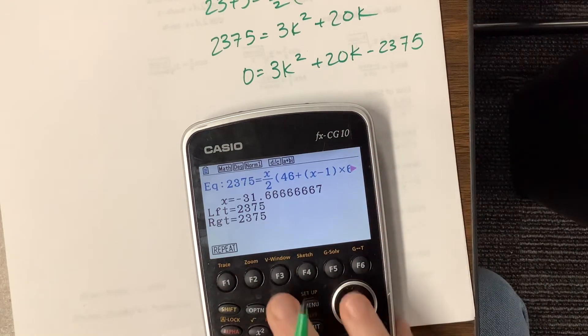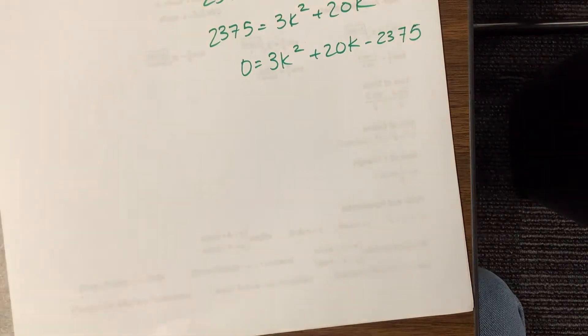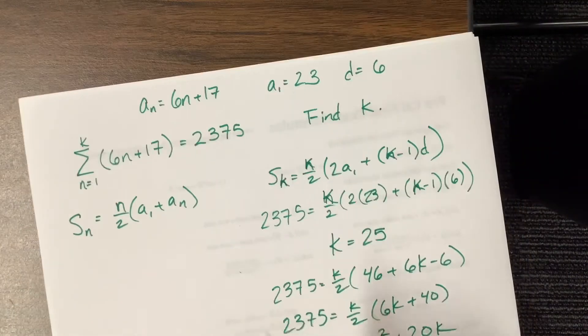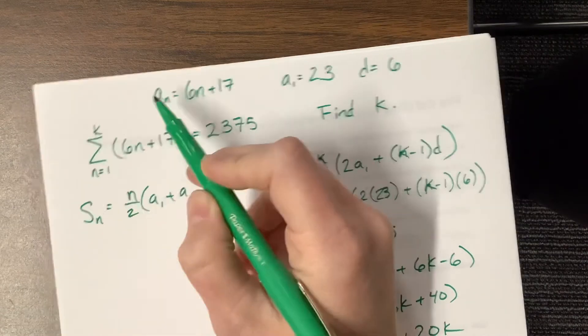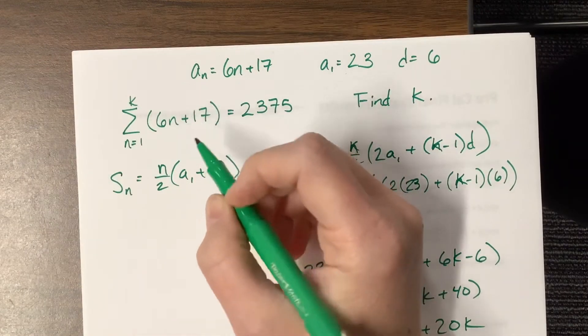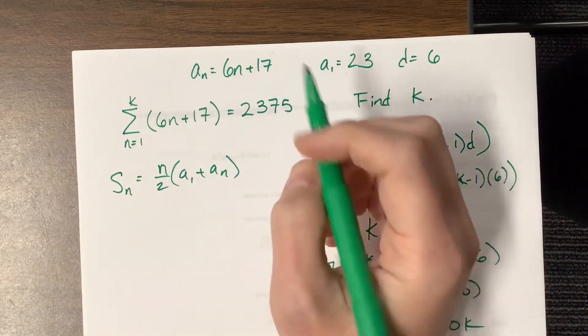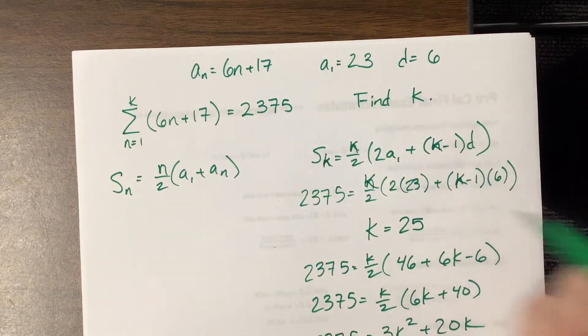But, in this particular case, we don't care about every answer, because it's a sequence, and so I'm looking for a term number, this has to be an integer. So that negative 31 and 2 thirds, or whatever it was, isn't any good for this particular context.